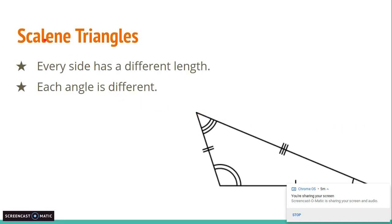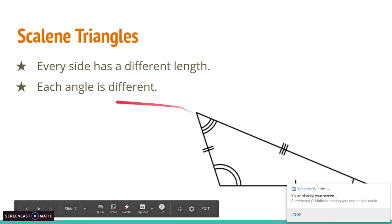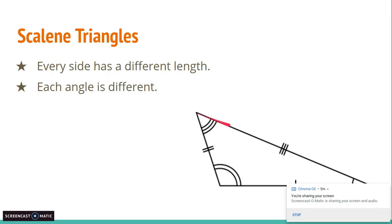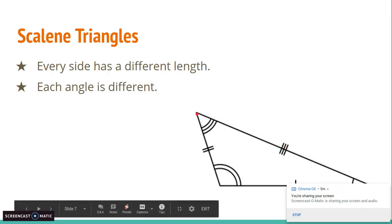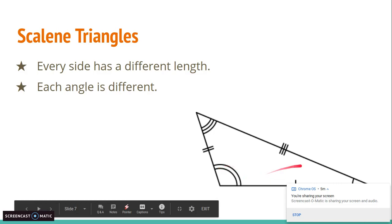Next, let's talk about scalene triangles. A scalene triangle is very different from the other two — it's any triangle where every side has a different length. So this side has a different length than this side, and a different length than this side. For example, if this side was 8 inches, this side would be 3 inches, and this side would be 6 inches. Since each side has a different length, each angle will also be different — so one angle can be 30 degrees, another 100 degrees, and another 50 degrees, all adding up to 180.